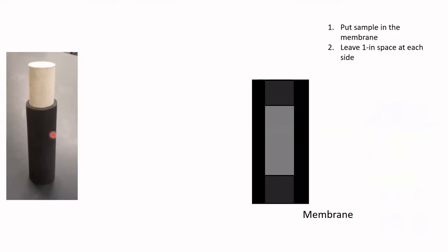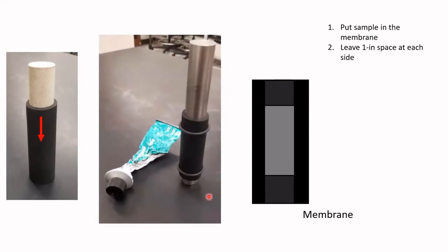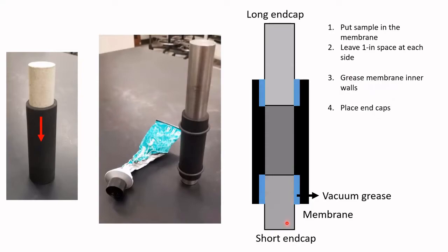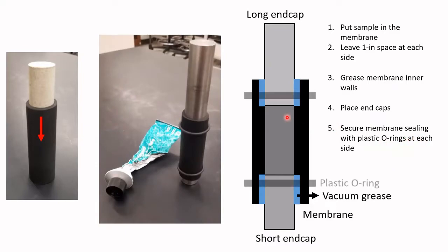Our first step is putting the sample in the membrane, leaving nearly one inch at each side. Then we put vacuum grease on the inner walls. After that, we place the end caps — the short end cap at the bottom and the long end cap at the top. Finally, we increase the sealing by placing plastic O-rings at each side of the sample to isolate it from the confining fluid.